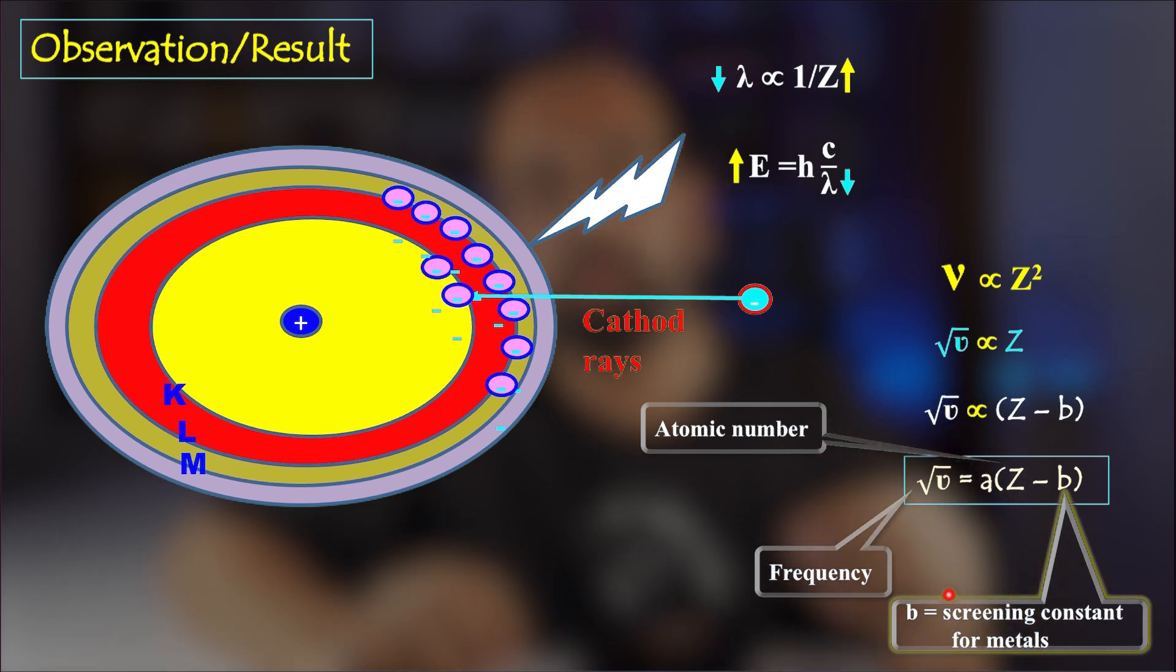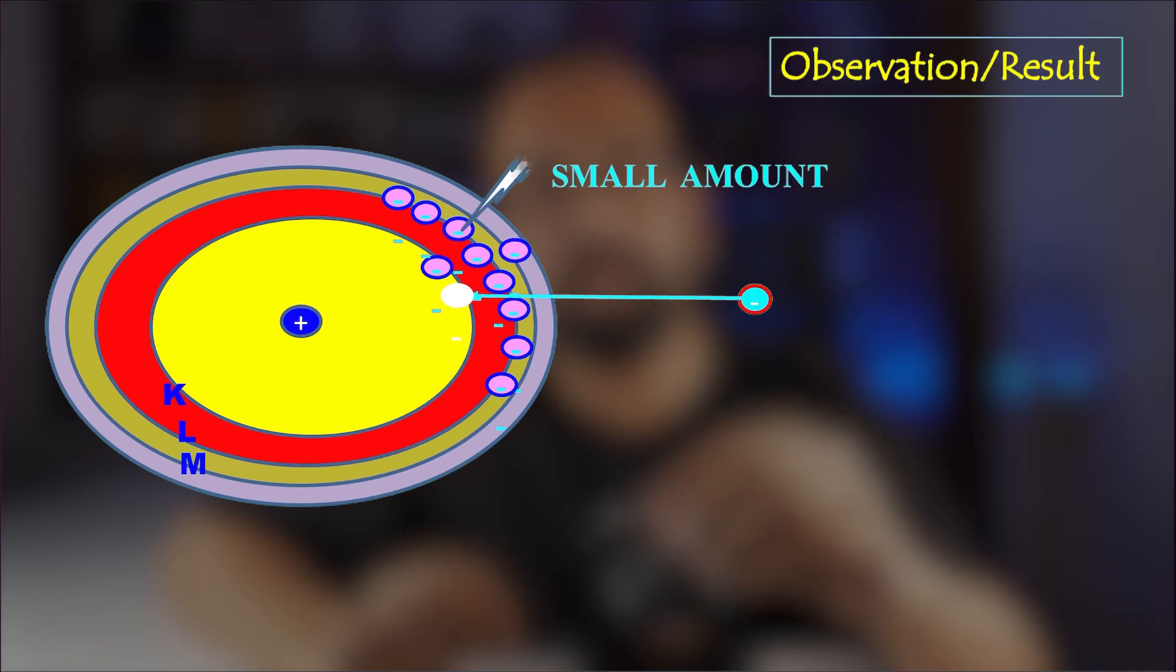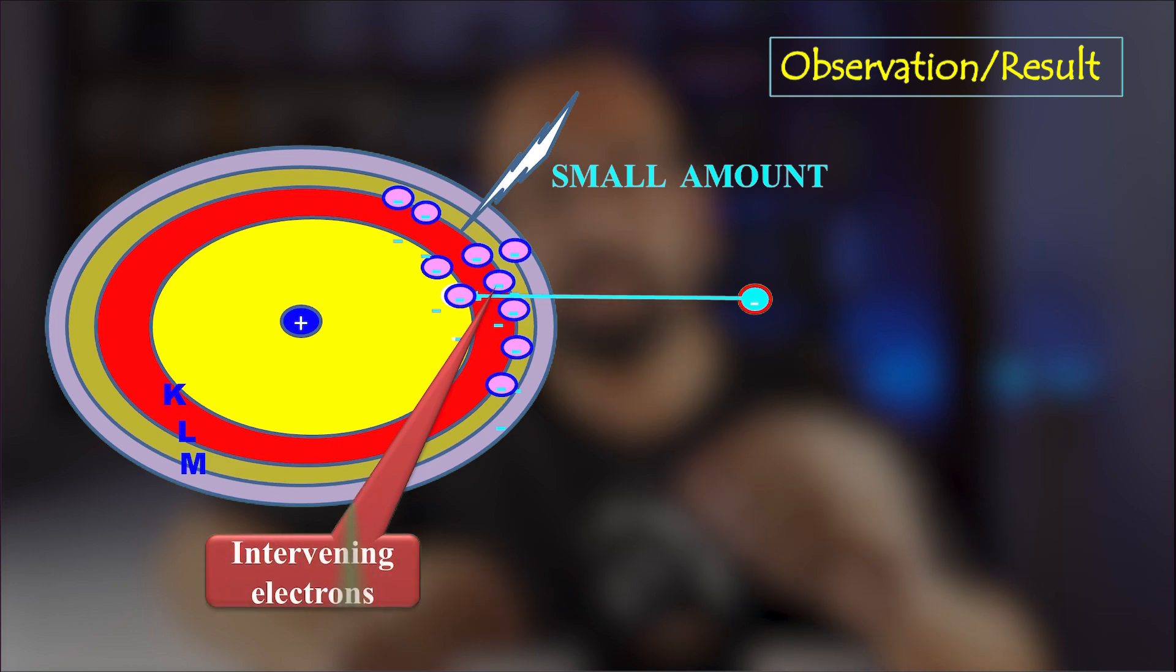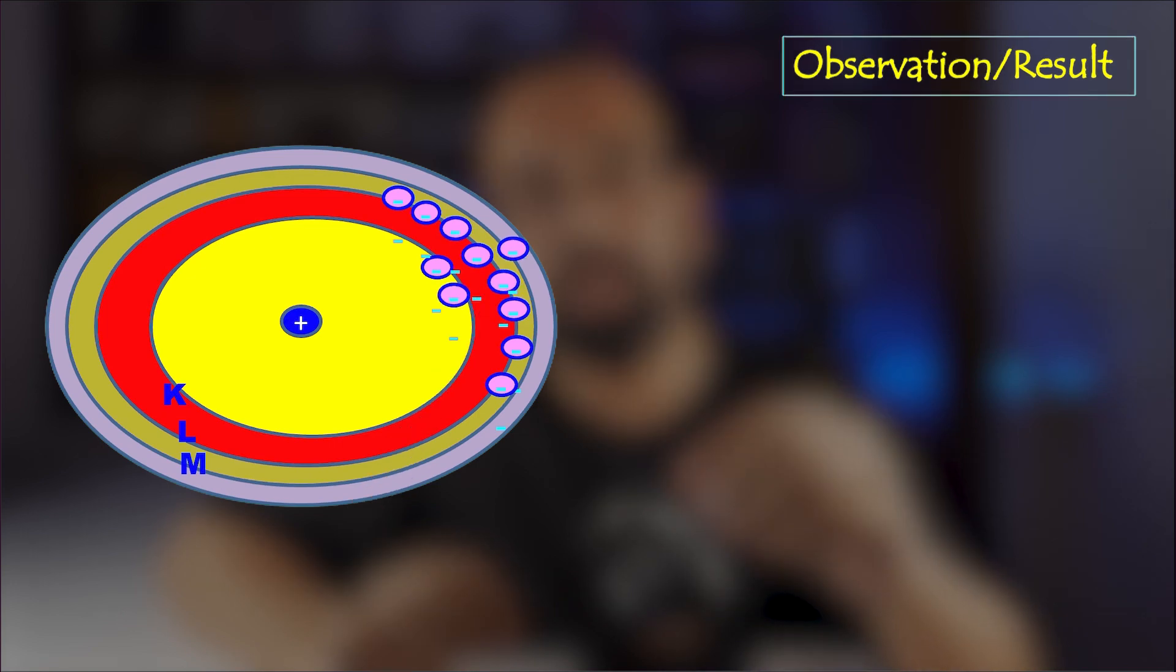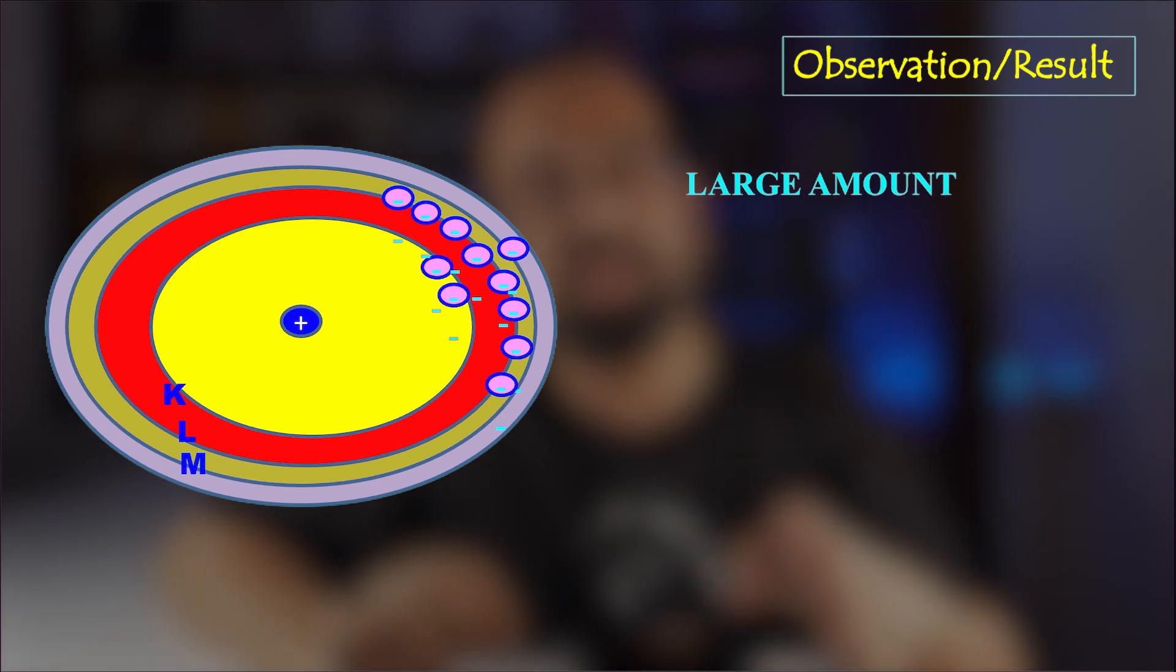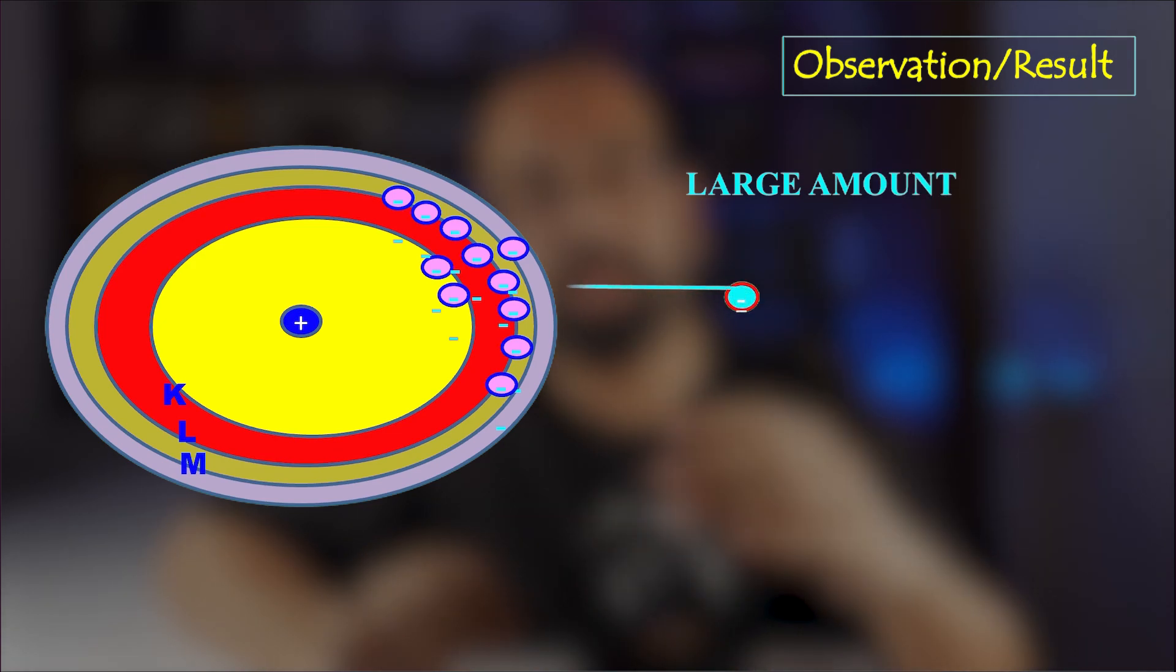In Moseley's law, the screening constant B depends on the line being studied. For example, B will be different for the K-alpha and K-beta lines. So the B basically depends on the line you are discussing, whether that is K-alpha, K-beta, L-alpha, L-beta, that B will keep on changing when you change the line you are studying.